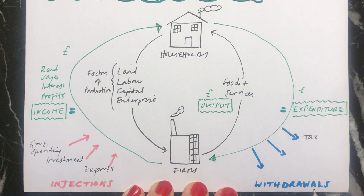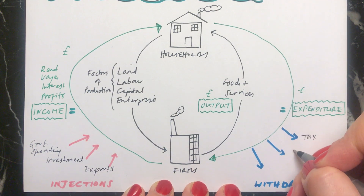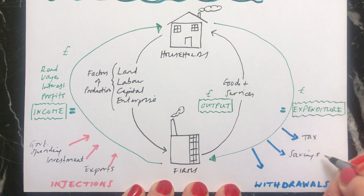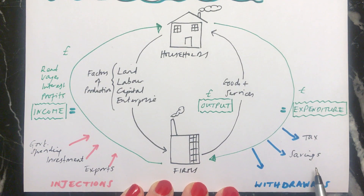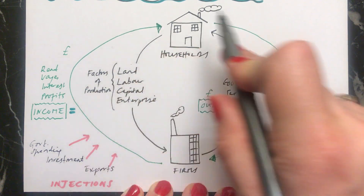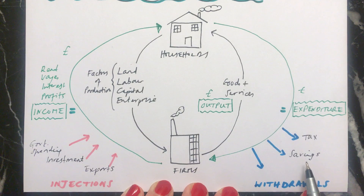The second type of withdrawal is where people are saving their money. If you save your money in a piggy bank at home, or put it in the bank, or do something else to save it, the money is no longer flowing round in the circular flow of income. So saving is another withdrawal.